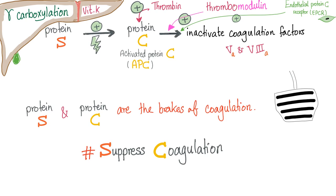The organ is the liver. The process is gamma carboxylation. The enzyme is gamma glutamyl carboxylase. It carboxylates all of the factors, especially 2, 7, 9, and 10, as well as protein C, protein S, and protein Z. Protein S will activate protein C — this is the APC — which will inactivate factors 5 and 8. Now we're anticoagulation. That's why protein S and protein C are the brakes of coagulation, not the accelerator. S and C suppress coagulation.